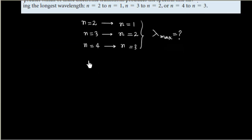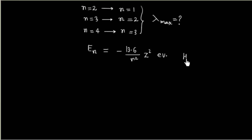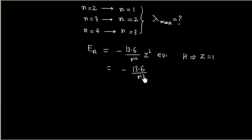The energy in a hydrogen-like atom is given by the formula: E = -13.6 / n² × Z² in electron volts. For a hydrogen atom, Z=1, so this simplifies to E = -13.6 / n² electron volts.